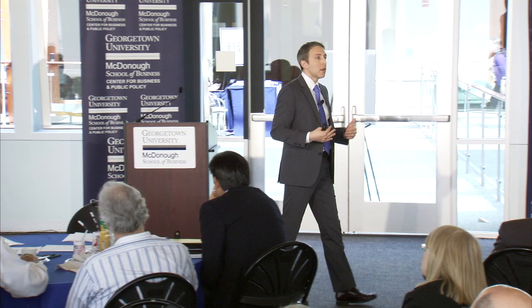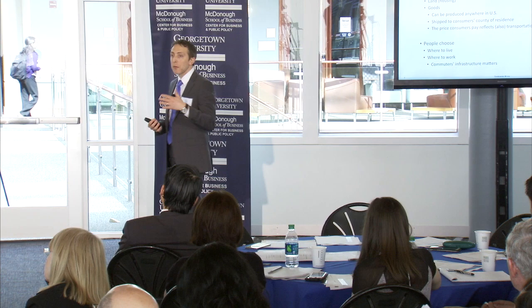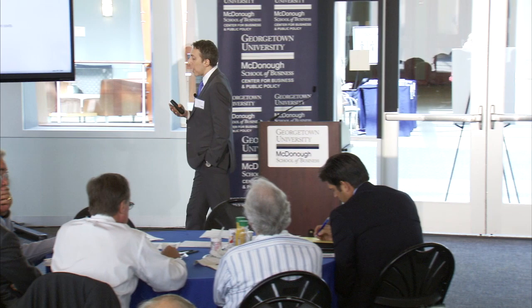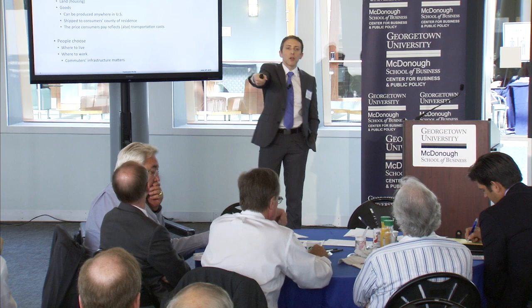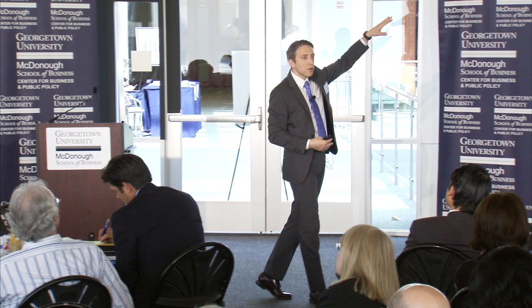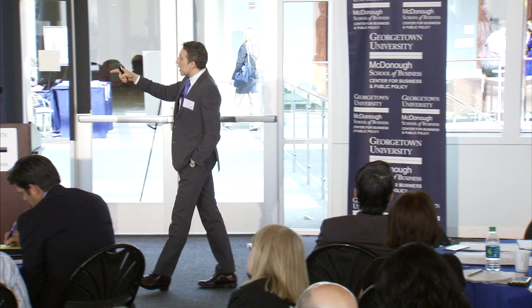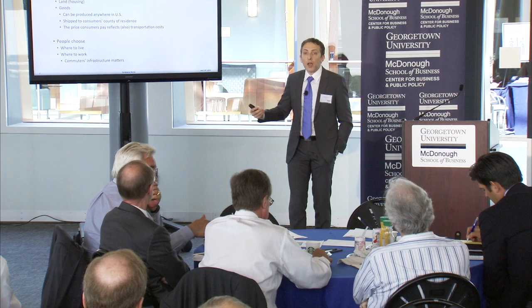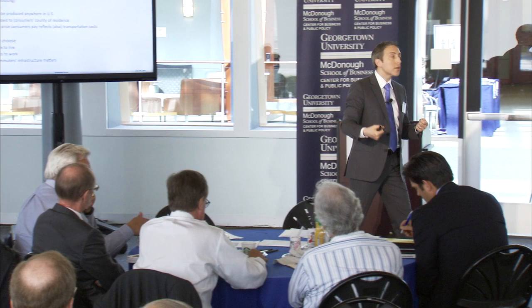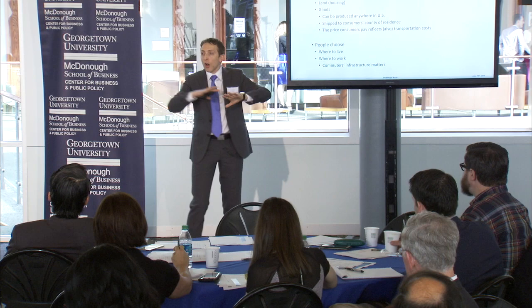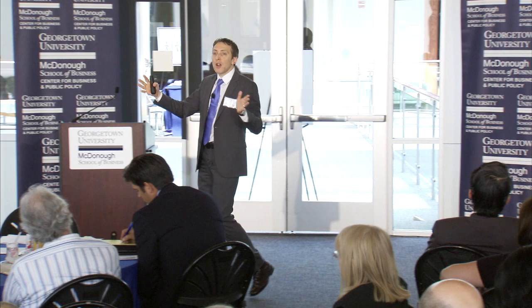The model has people and it has firms. People have two roles. As consumers, they spend their money on land or housing — I'll use these terms interchangeably — and they spend money on goods. When they spend money on goods, these goods can be produced anywhere; they are shipped from where they are produced to their county of residence, and the price consumers pay will incorporate local conditions where the goods are produced and the transportation costs. As workers, people choose where to live and where to work, looking at the cost of living in one place and the jobs they can find nearby. The transportation infrastructure for commuters matters for the distribution of commuting patterns across the U.S. in the same way as the transportation infrastructure for merchandise matters for the distribution of prices that consumers pay.